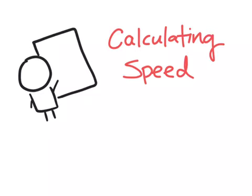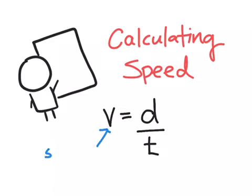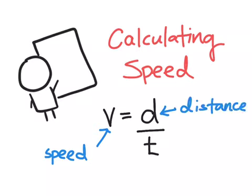So speed in physics is represented by the letter V. So V equals distance, which is D, over time, which is a lowercase t. So here speed is the lowercase v, distance is the lowercase d, and time is this lowercase t.